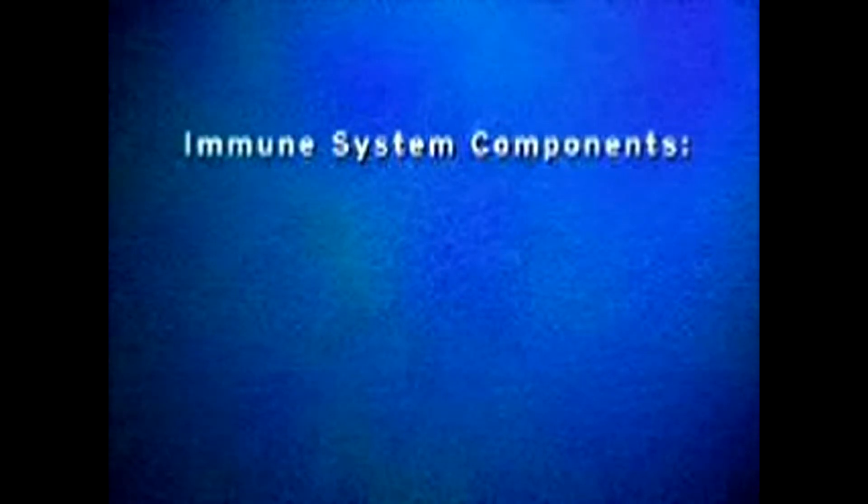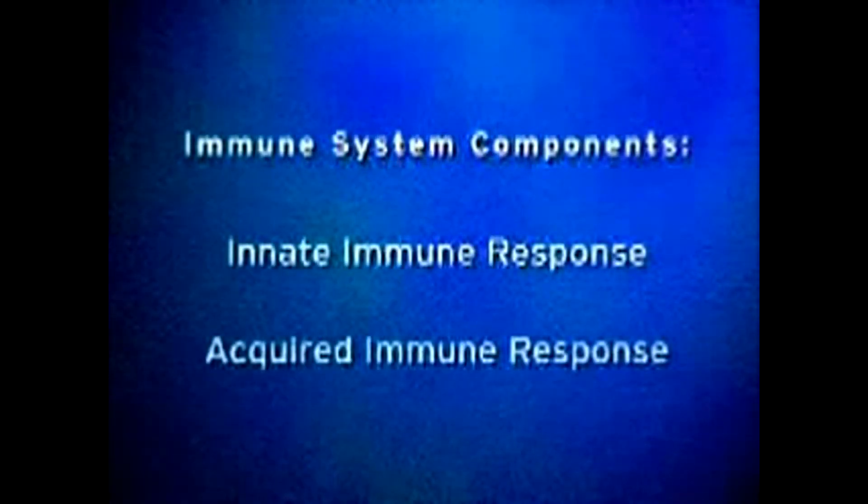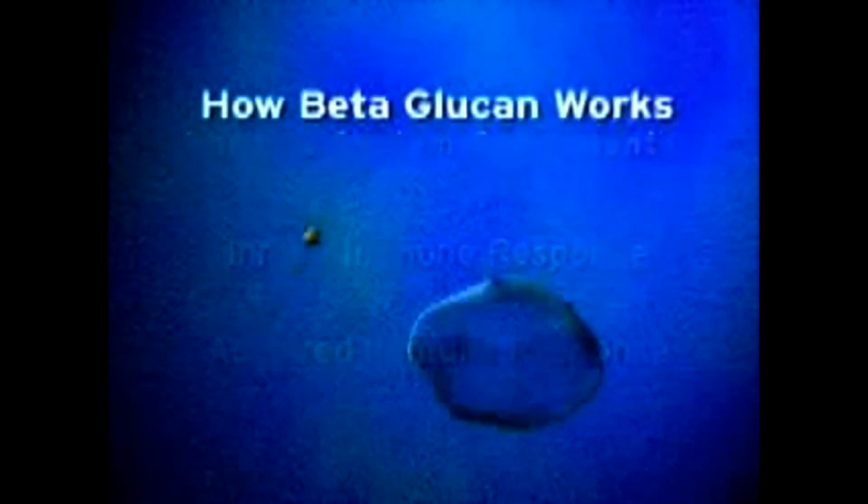The immune system has two components, the innate and the acquired. Beta-glucan works to activate both.